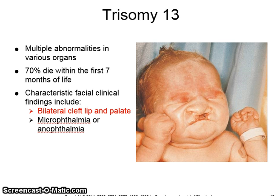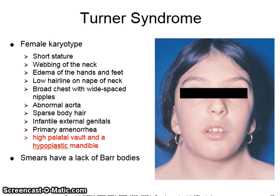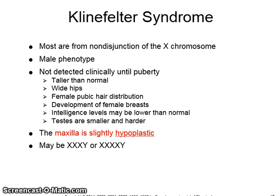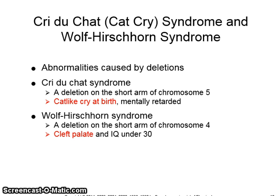In Trisomy 13, the facial clinical characteristics include bilateral cleft lip and palate, microphthalmia or anophthalmia, which means either small or missing eyes. In Turner syndrome, the oral and facial manifestations are a high palatal vault and a hypoplastic or small mandible. In Klinefelter syndrome, the maxilla is slightly hypoplastic. Cri du Chat is a syndrome where the child has a cat-like cry at birth. In Wolf-Hirschhorn syndrome, there is a cleft palate as an oral manifestation.